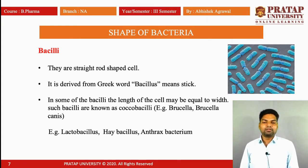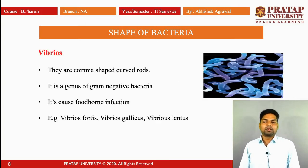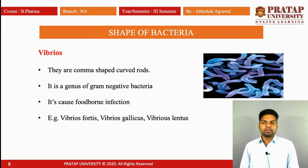Third is vibrios. They are comma-shaped, rod-curved cells. Vibrios are a genus of gram-negative bacteria, meaning their cell wall is thin and made up of peptidoglycan. They cause food-borne disease. Examples are Vibrio fortis, Vibrio gallicus, and Vibrio lentus.